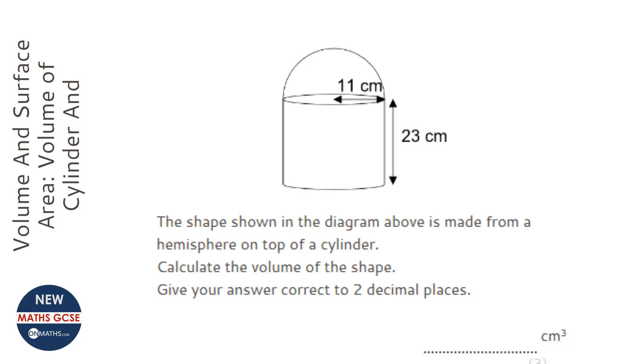Okay, so they've combined two shapes in this question. They've got a hemisphere and a cylinder. So what we do is just work out the volume separately and then put them together.